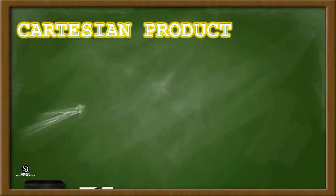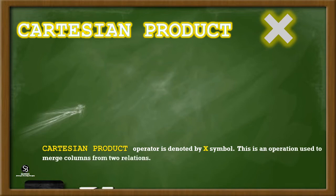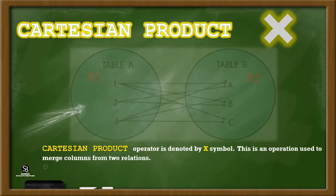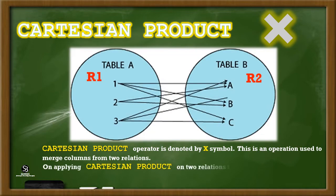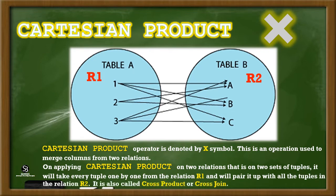Cartesian Product. The Cartesian Product operator is denoted by the X symbol. This is an operation used to merge columns from two relations. On applying Cartesian product on two relations, it will take every tuple one by one from relation R1 and pair it up with all the tuples in relation R2. It is also called cross product or cross join.